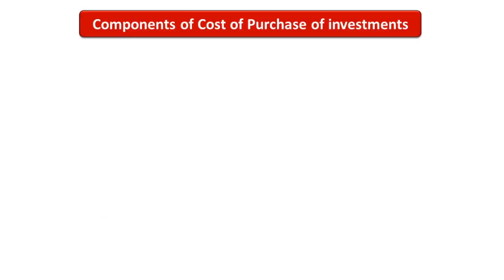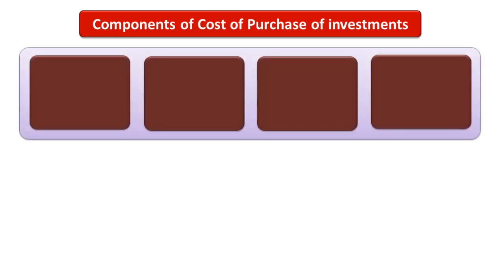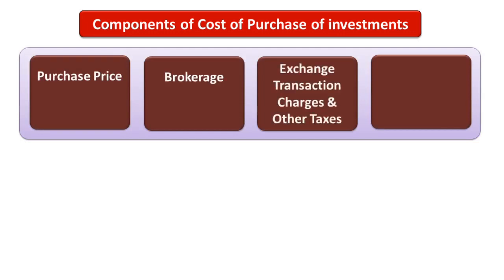First of all, we need to understand what are the different components of cost of purchase of an investment. The first one is the purchase price itself. Second is the amount of brokerage, then exchange transaction charges and other taxes, and lastly stamp duty.